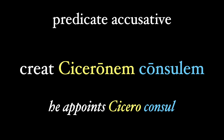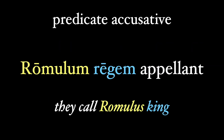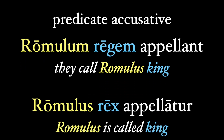We can see this predicate accusative in action when we make our accusatives nominative in a passive sentence. So going back to the sentence about Cicero becoming consul, we can turn this around and make Cicero our subject. Cicero consul creatur — Cicero is appointed consul. You can see from our English translation that consul is the predicate nominative, and Cicero is truly the subject of creatur. Our active sentence of Romulum regem appellant — they call Romulus king — where regem is the predicate accusative, can be made passive with Romulus rex appellatur — Romulus is called king. Romulus is the subject of the verb appellatur, and rex is the predicate nominative.